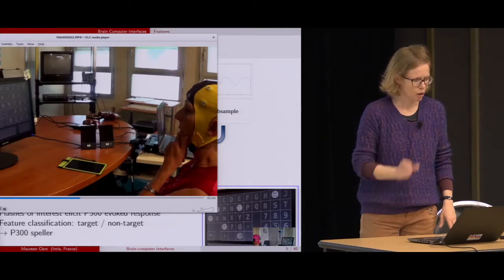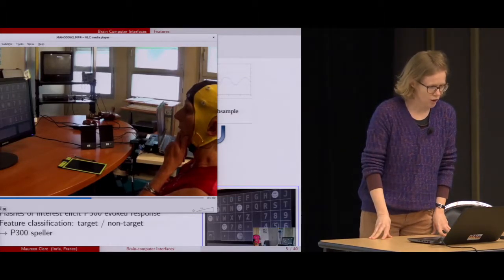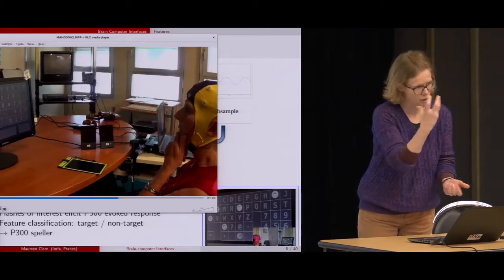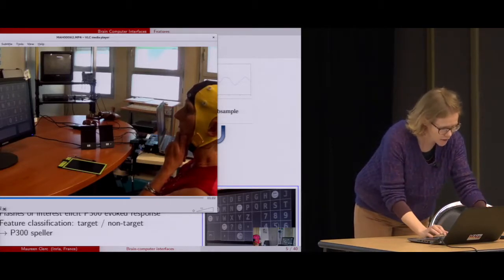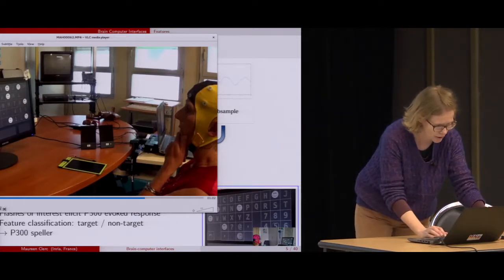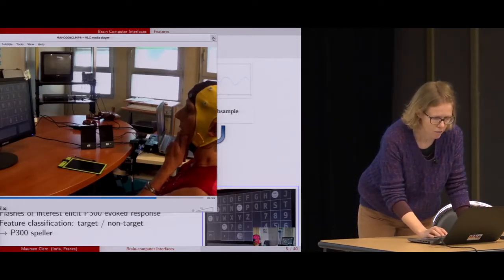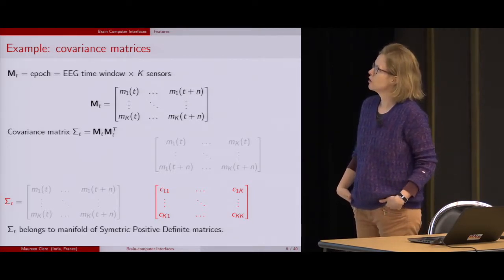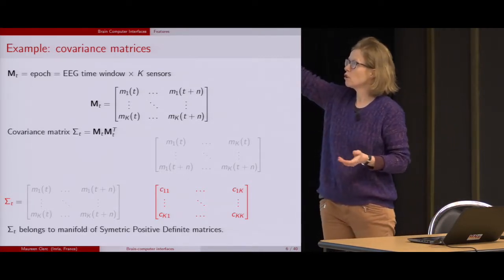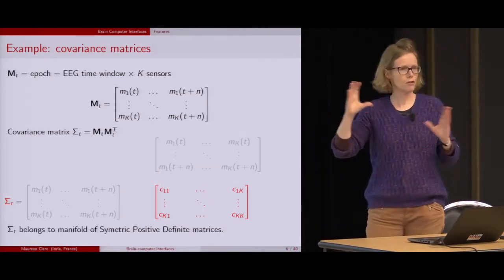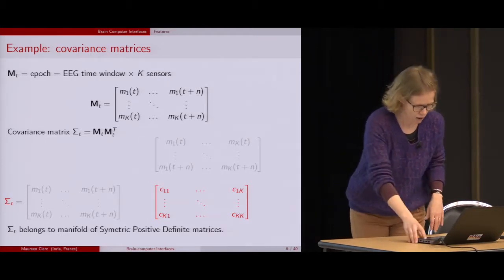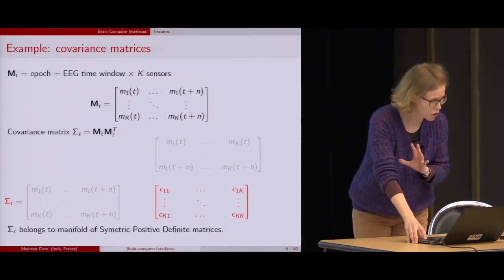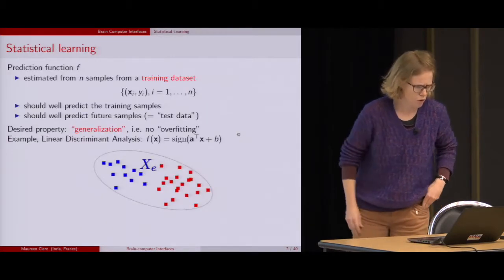The person tries to type one letter at a time — she watches stimuli that flash, and each time the group of letters contains the letter she wants to type, after a few repetitions, it gets shown to her. The command is typing a letter. Another example of features are covariance matrices, which look at the correlation between chunks of data across sensors and time. These covariance matrices can be quite interesting because they have some invariance properties we'll go into a little bit later.